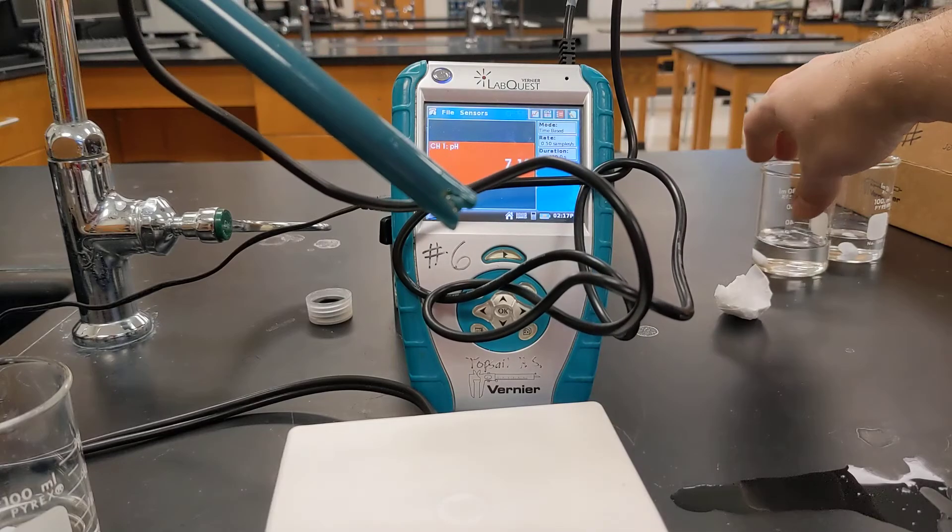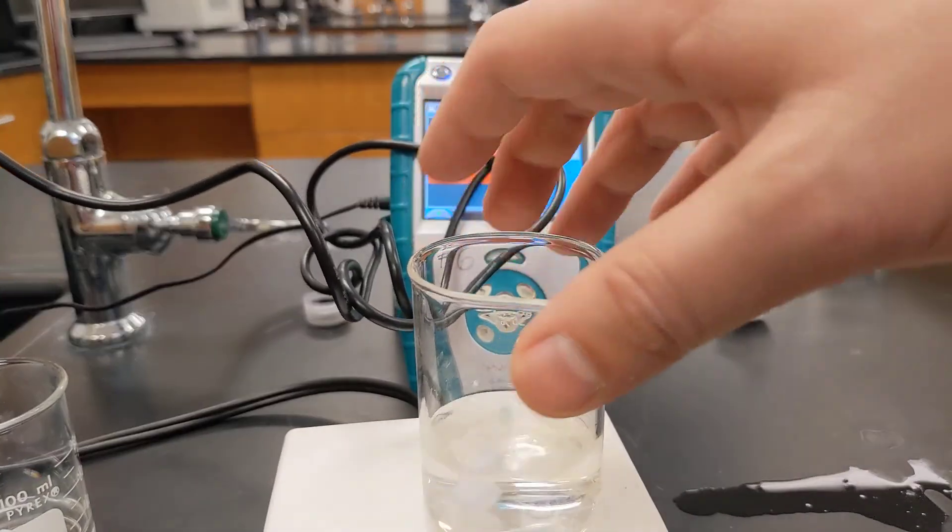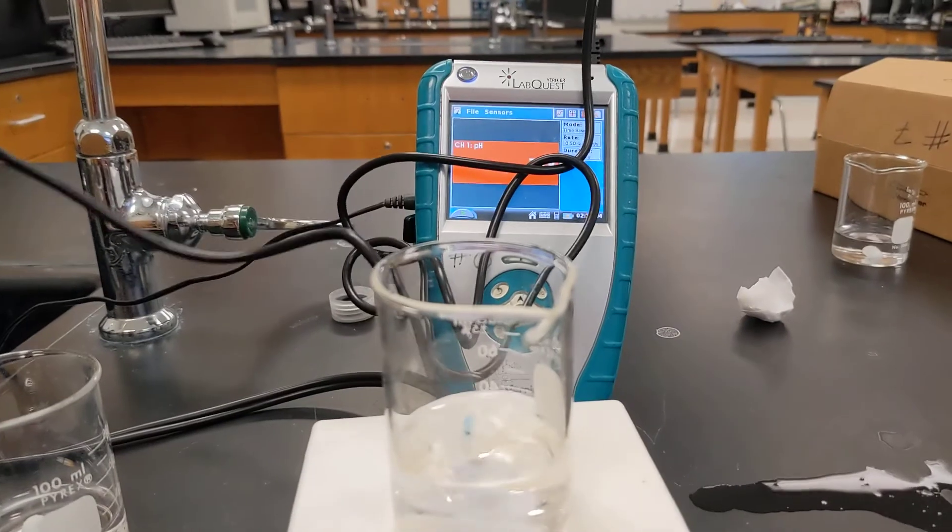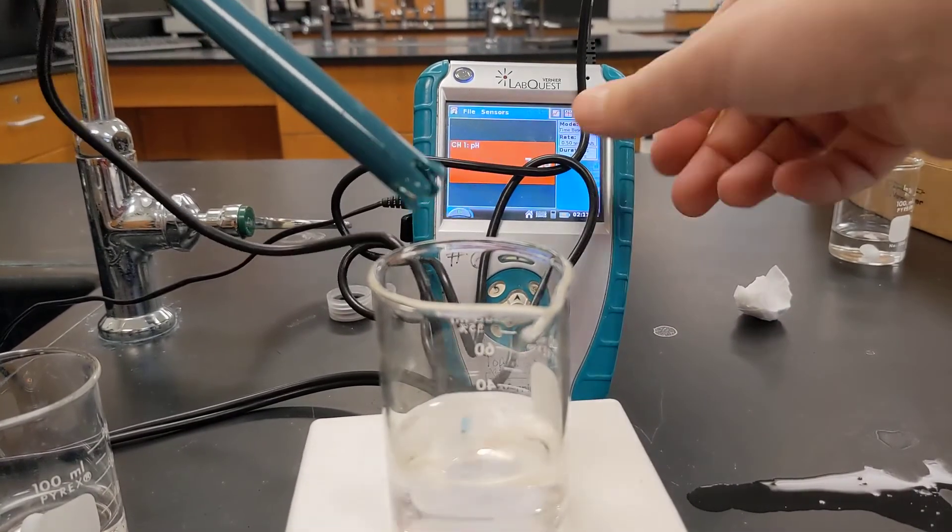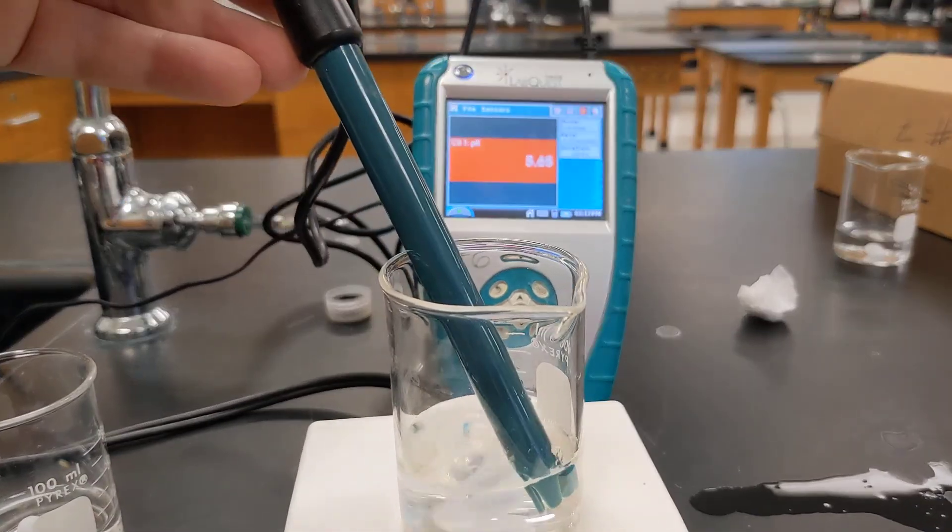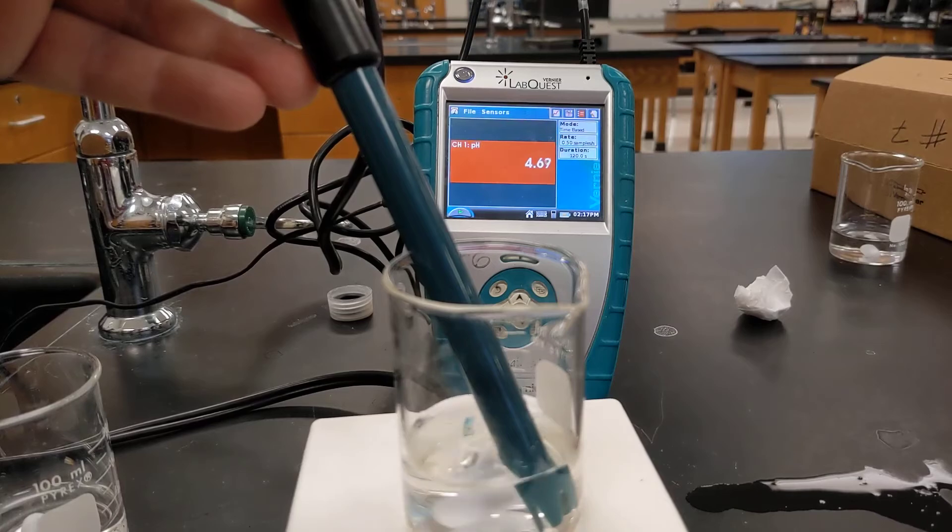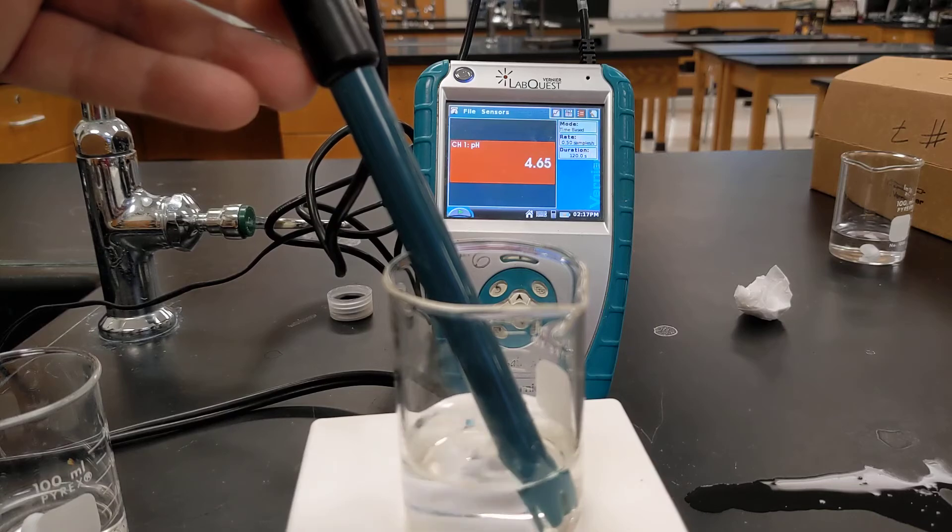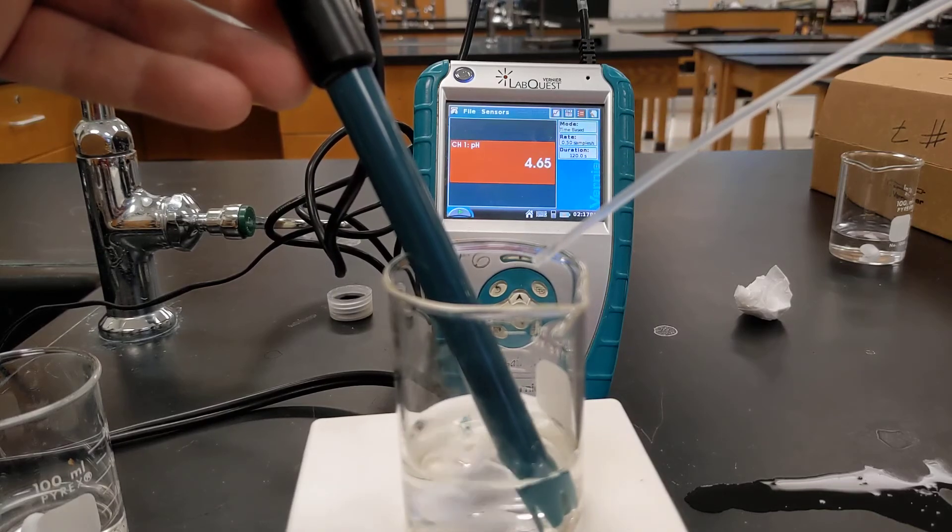I have yet another buffer solution I can show you that I've made using acetic acid and sodium acetate. We'll see what happens with it. See if I can keep everything in view for you. So with this one, this one has a pH of around four point six five. So let's see what happens if I add some hydrochloric acid.